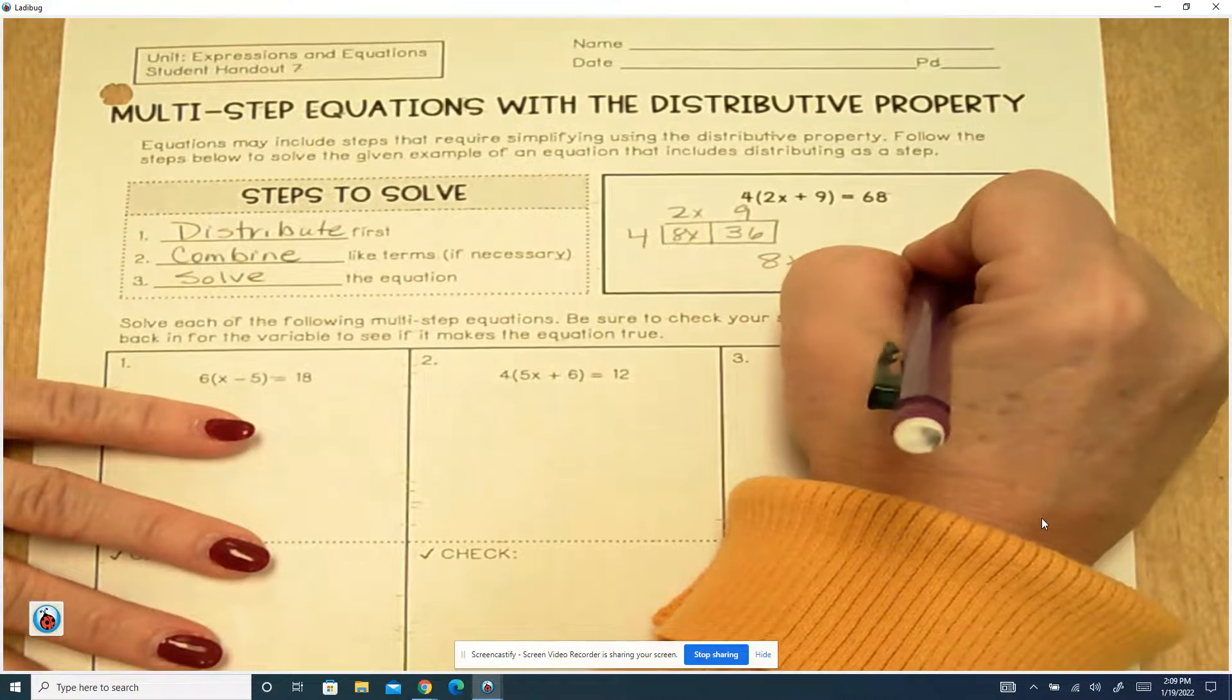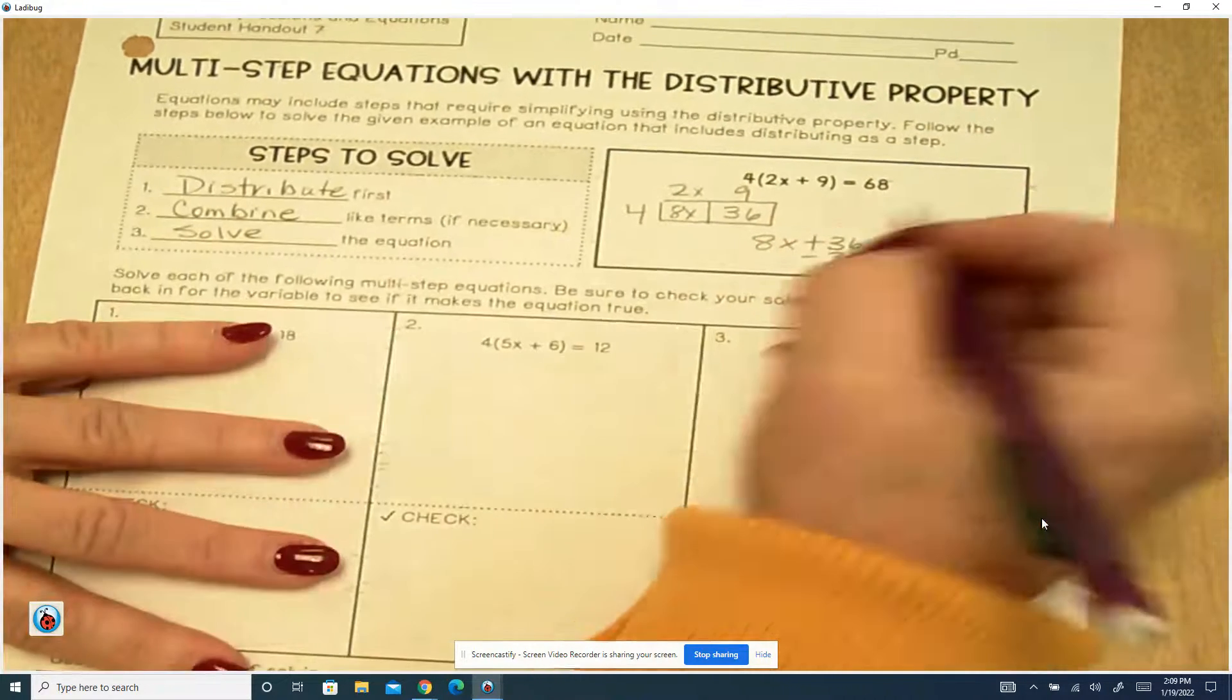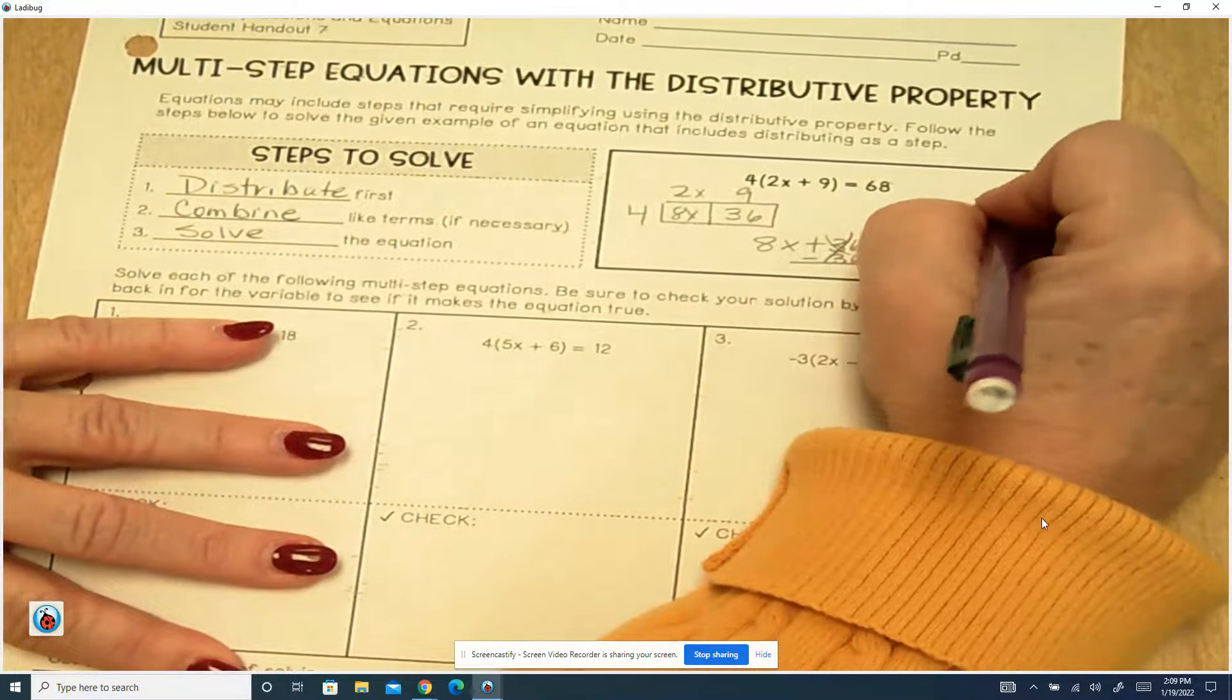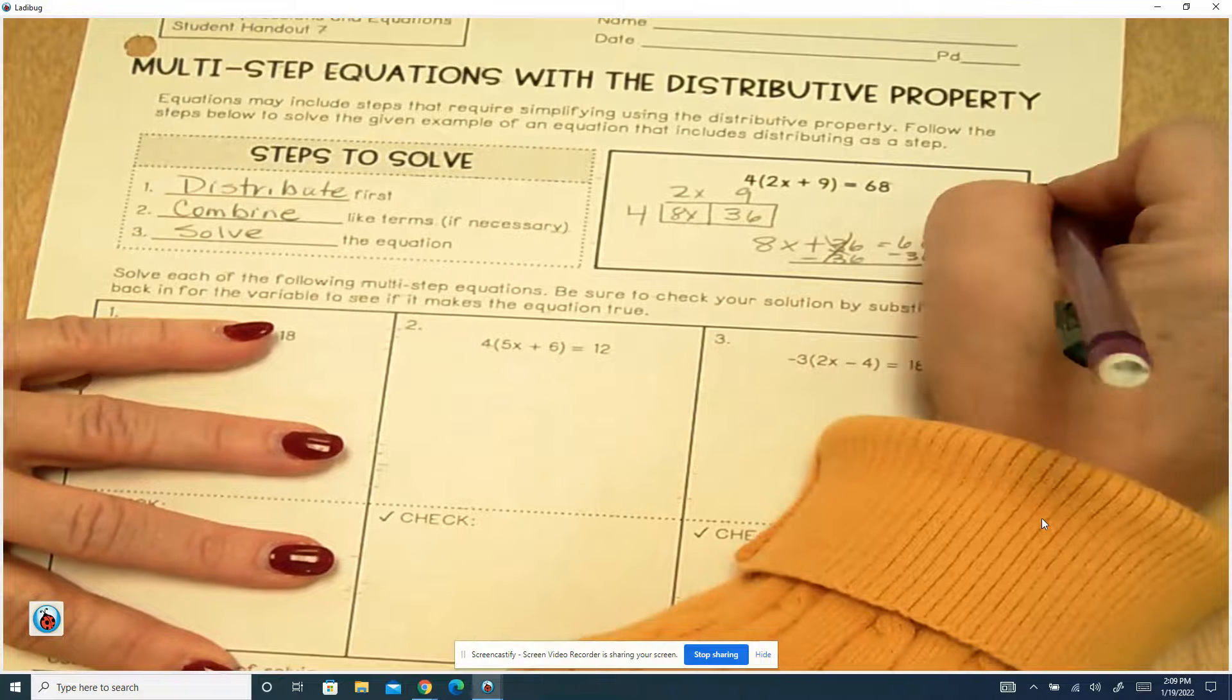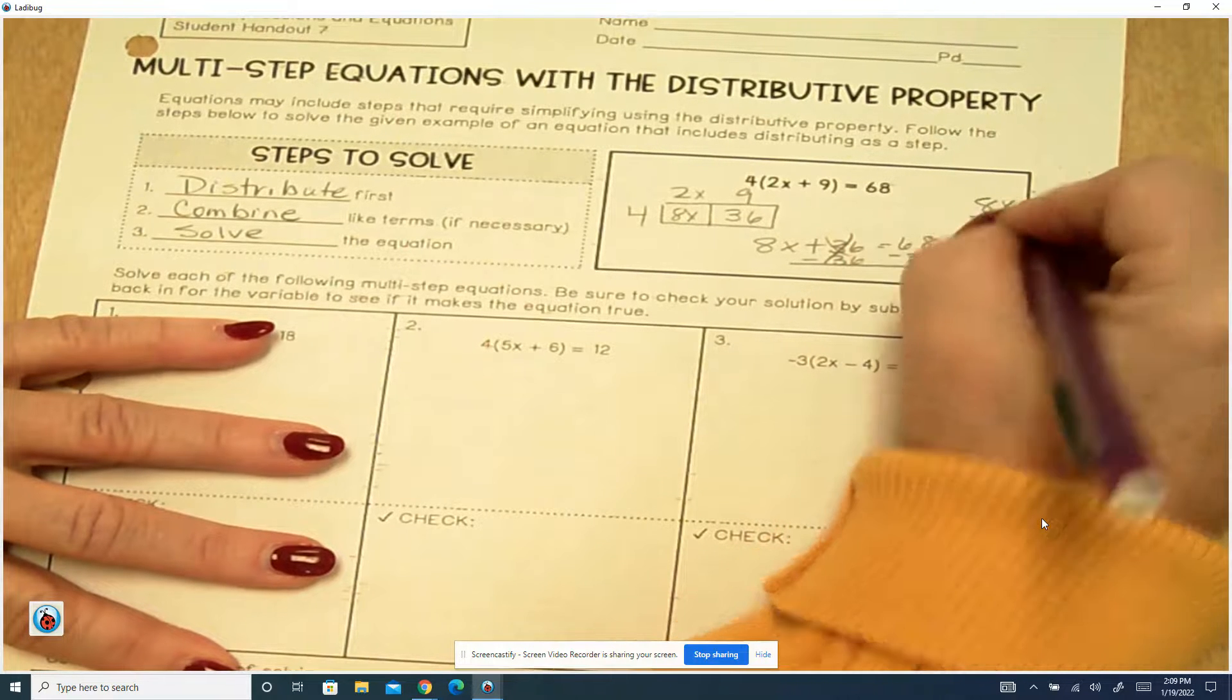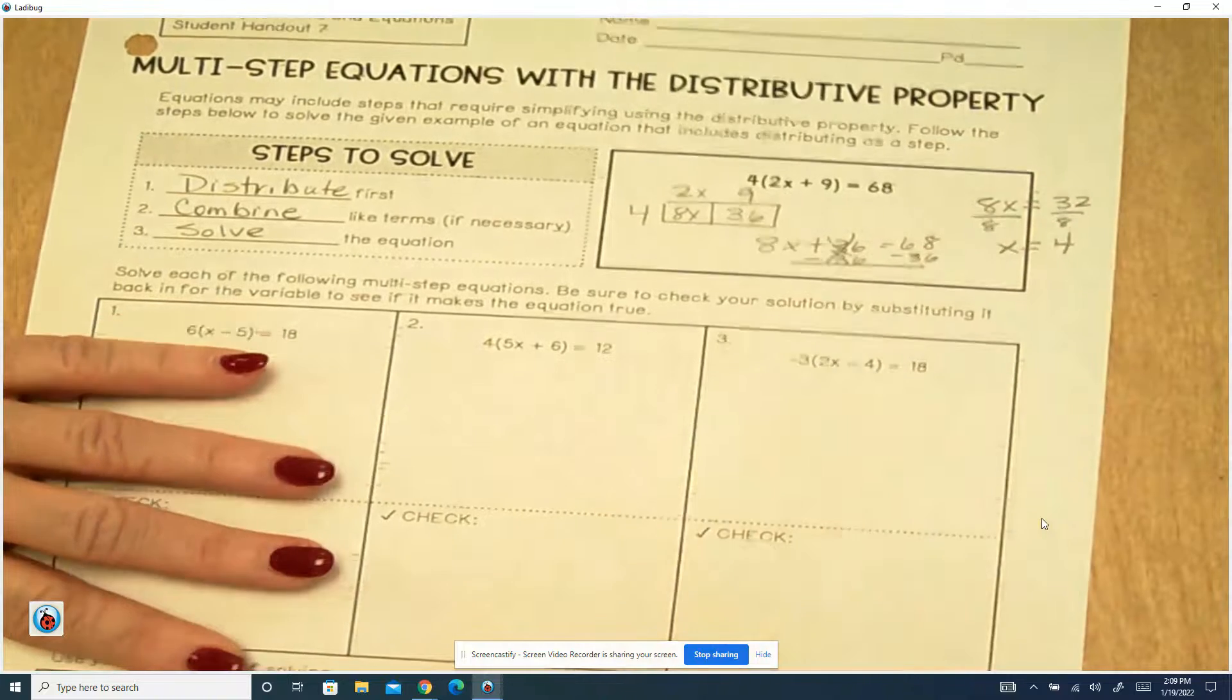We're going to minus 36 from both sides, and that's going to leave us with 8x equals 32, divide both sides by 8, and then x equals 4.